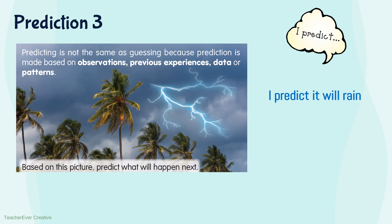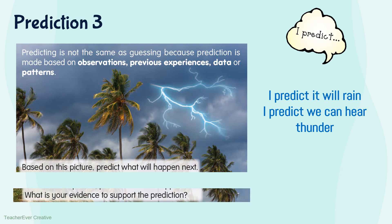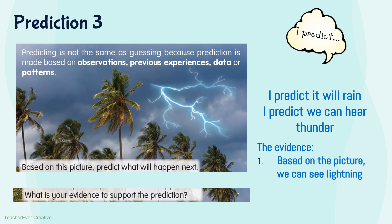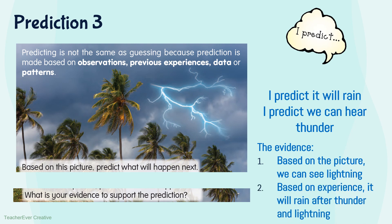I predict it will rain. I predict we can hear thunder. What is your evidence to support the prediction? Remember, when we are making a prediction, we must base our prediction on data, pattern or personal experiences. If you look carefully at the picture, we can see lightning. So the evidence is: based on the picture, we can see the lightning. And based on our experience, it will rain after thunder and lightning.